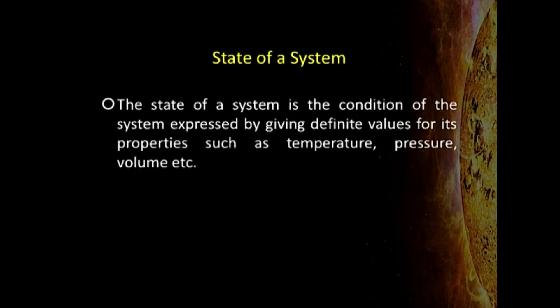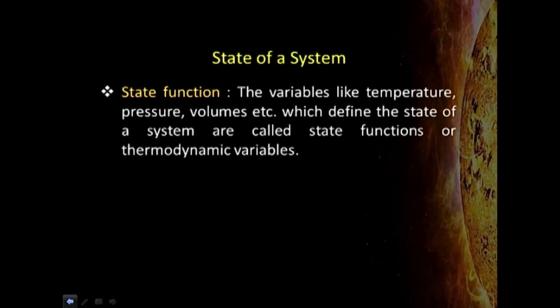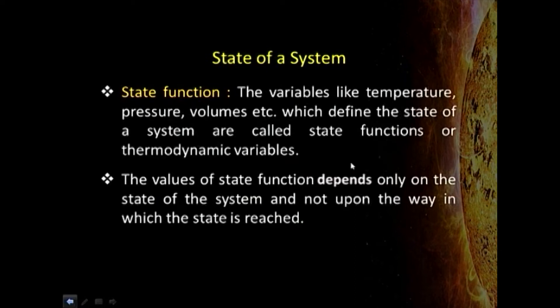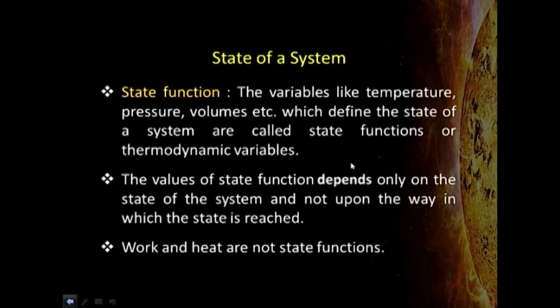The state of a system is the condition of the system expressed by giving definite values for its properties such as temperature, pressure, volume, etc. To define a system, we have to define all the parameters assigned to it — like an address. These parameters are called state functions, which are required to define a system perfectly. A state function depends only on the initial and final state, not on the path taken. Work and heat are the only two functions which are not state functions — they require knowledge of how the system changed from one state to another.